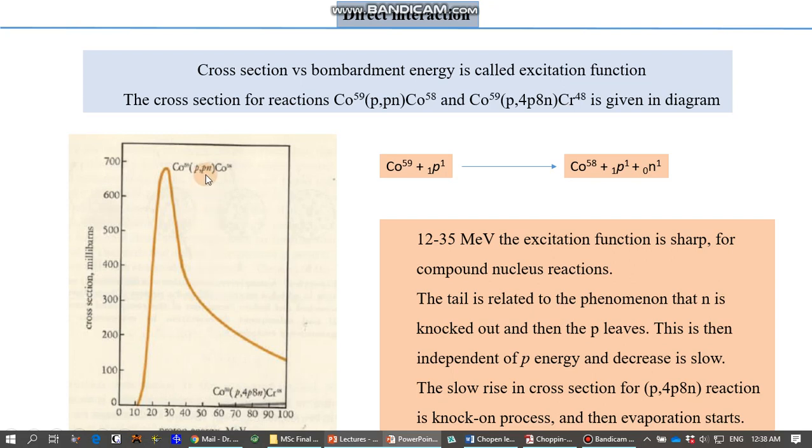The neutron is first followed by proton and this is then independent of proton energy. In this case, if we want to carry out this reaction, in this region no reaction will be observed and then the decrease is slow. The slow rise in cross section for this reaction where proton has been bombarded and four protons and eight neutrons are produced—this reaction is knock-on process.